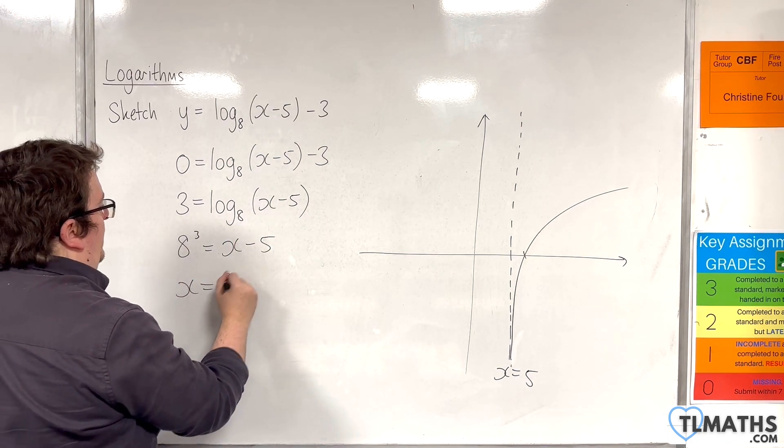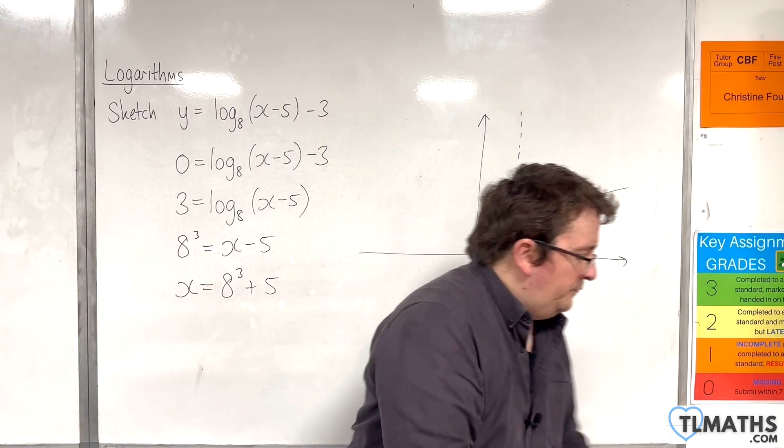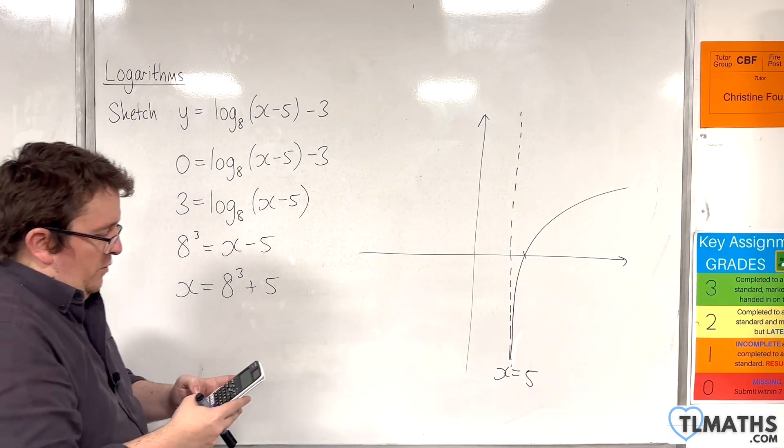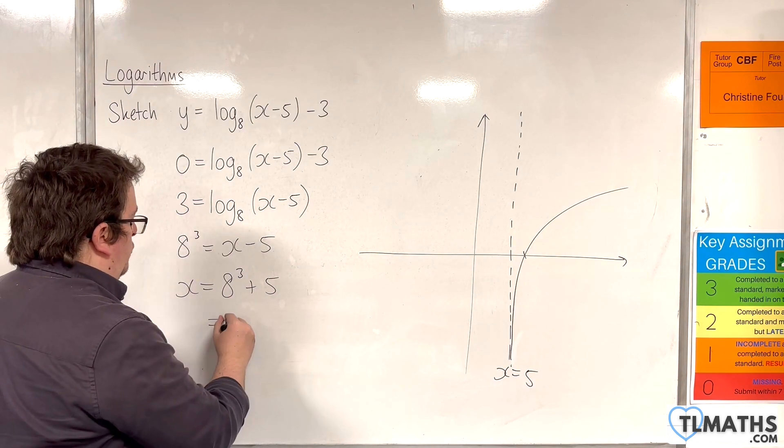So x is 8 cubed plus 5. So 8 cubed plus 5 is 517.